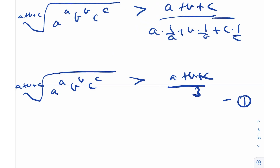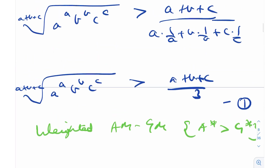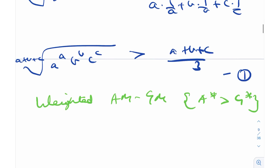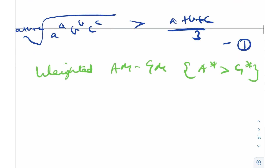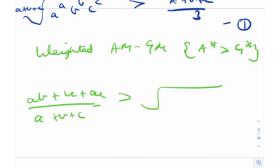Next, I'll use the weighted AM-GM inequality, i.e., A-star > G-star (strict because they're distinct). Plugging in the formula gives: (AB + BC + AC) divided by (A+B+C) is greater than the (A+B+C)-th root of A^B · B^C · C^A. Label this as Result 2. Notice that the radicals in both expressions have the same power, so we just need to compare the middle terms.